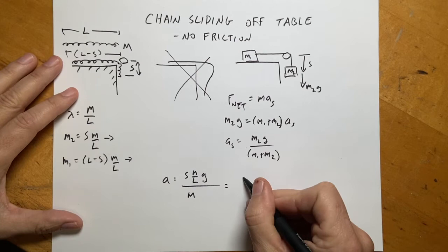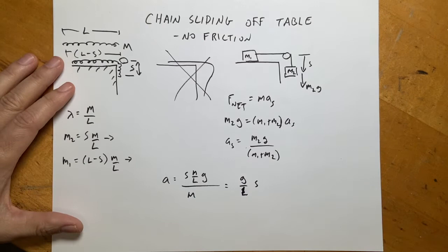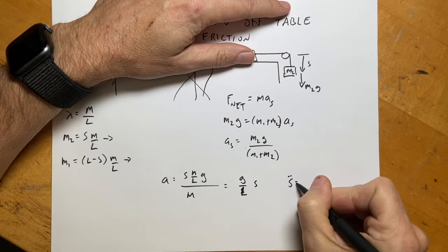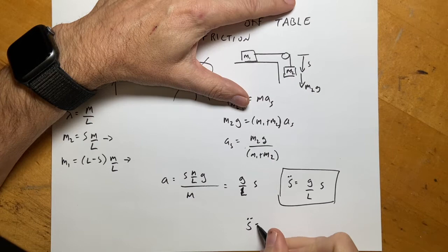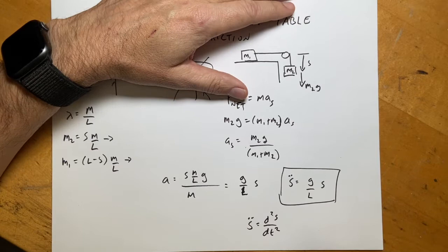Rewriting this as a differential equation: s̈ = (g/l)·s, where s̈ is the second derivative of s with respect to t. That's my equation of motion, and it's the same solution I found before using the Lagrangian.